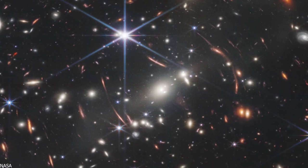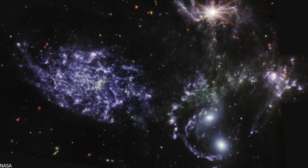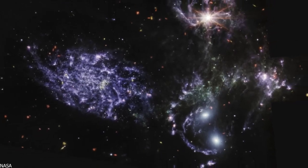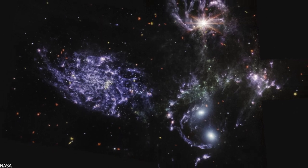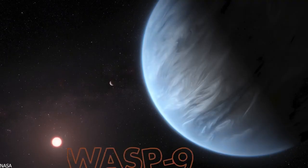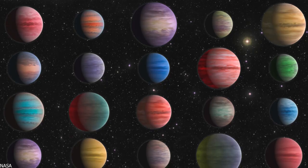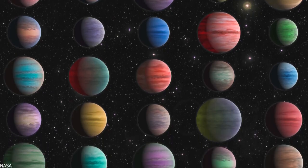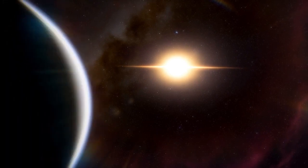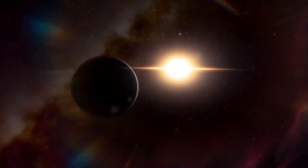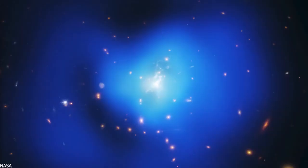In an attempt to demonstrate Webb's unparalleled ability to analyze distant atmospheres, NASA has chosen to observe WASP-96b, one of more than 5,000 confirmed exoplanets in the Milky Way. It is located approximately 1,120 light-years away in the southern sky constellation Phoenix.